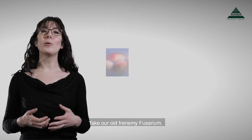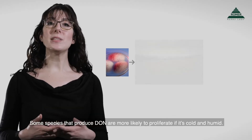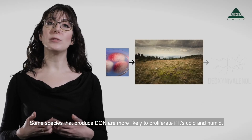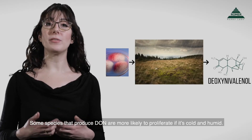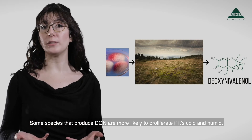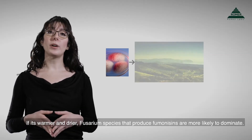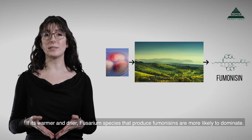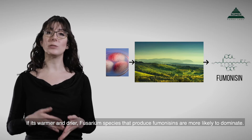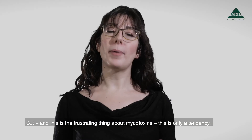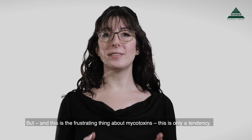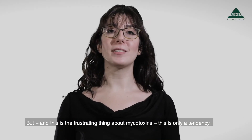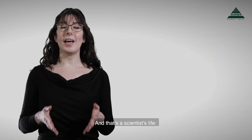Take our old frenemy Fusarium. Some species that produce DON are more likely to proliferate if it's cold and humid. If it's warmer and drier, Fusarium species that produce Fumonisins are more likely to dominate. But, and this is the frustrating thing about mycotoxins, this is only a tendency.